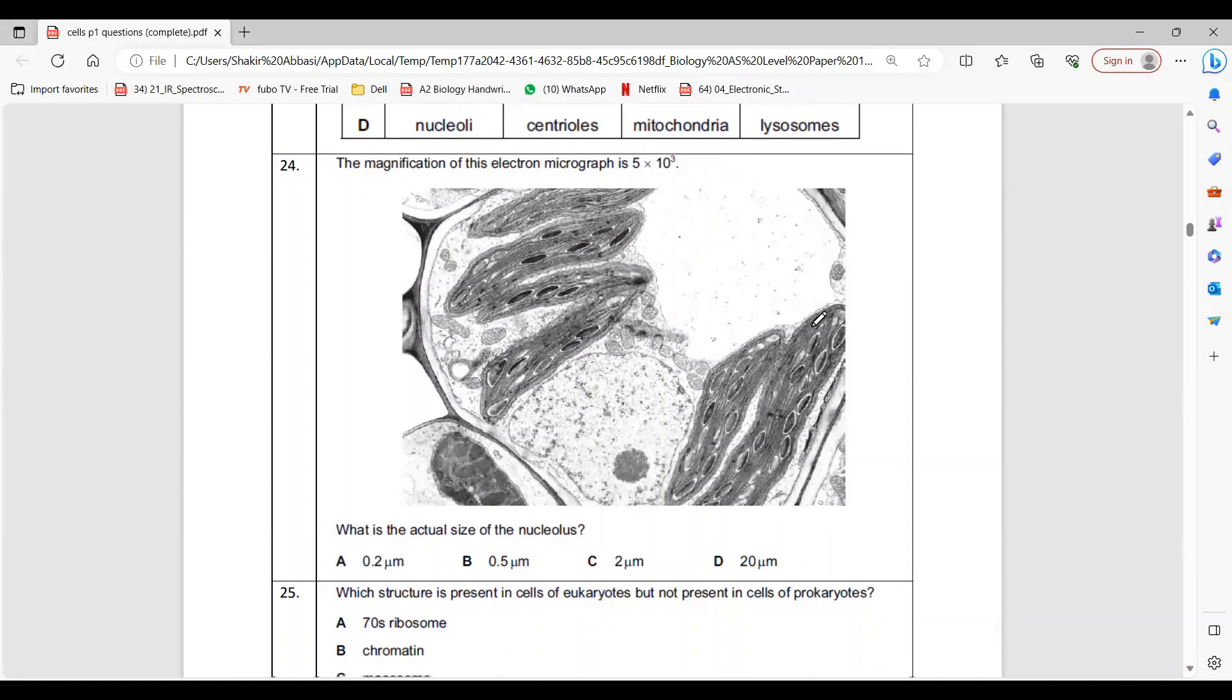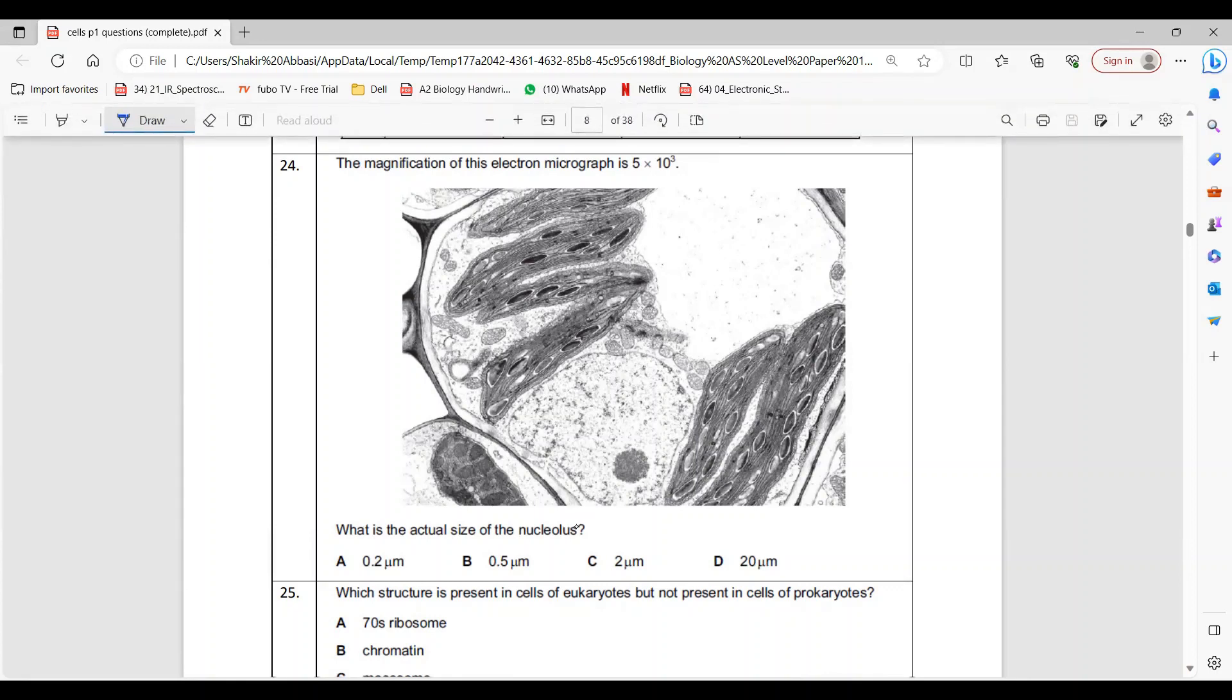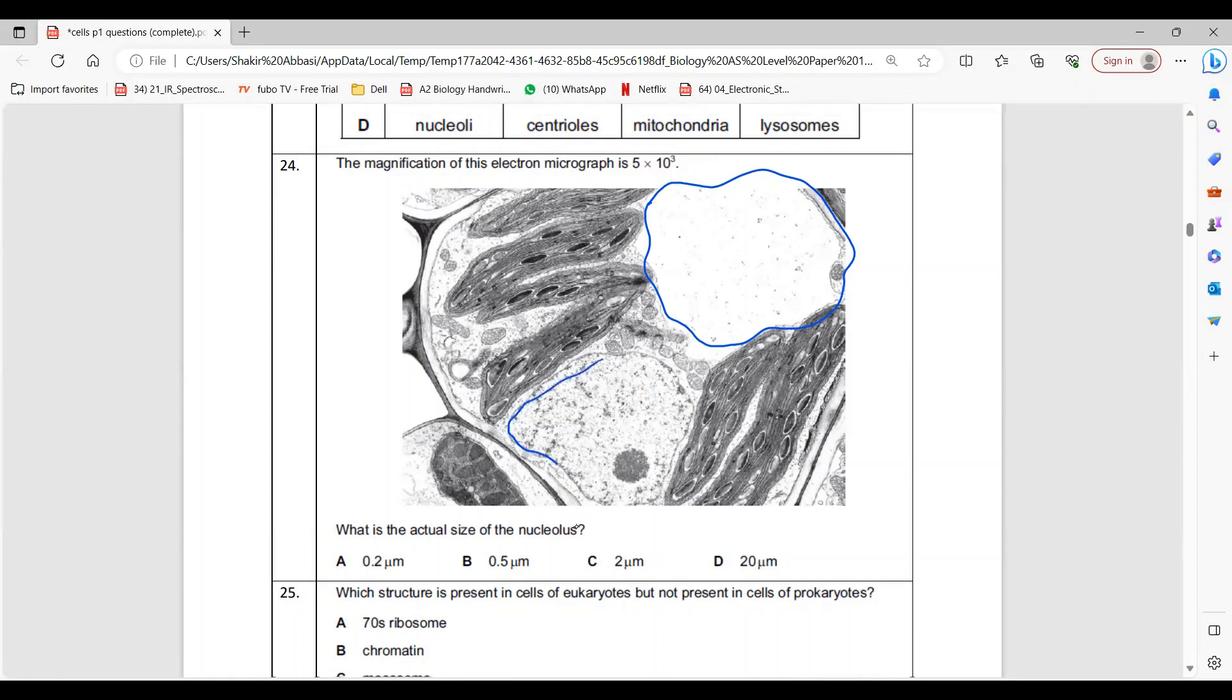Question 24: What is the actual size of the nucleolus? Where is nucleolus here? This is a plant cell - here is the vacuole, and this seems to be the nucleus, and this one seems to be the nucleolus. These are all chloroplasts.